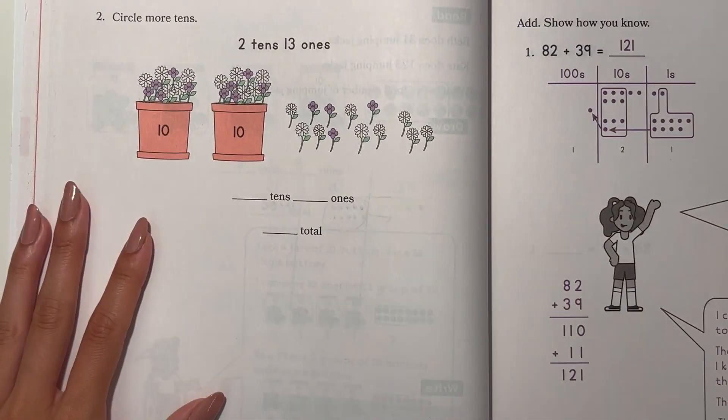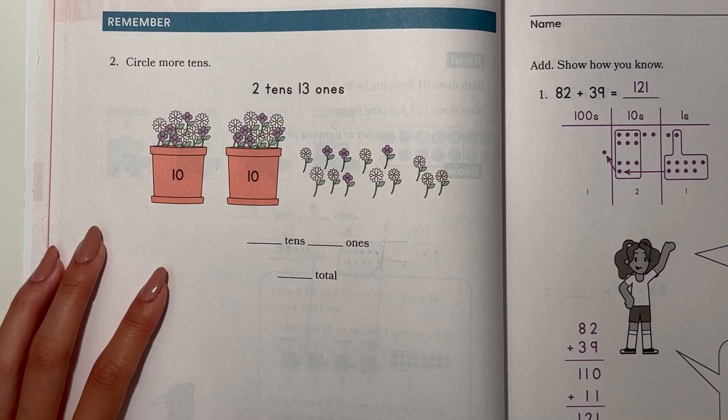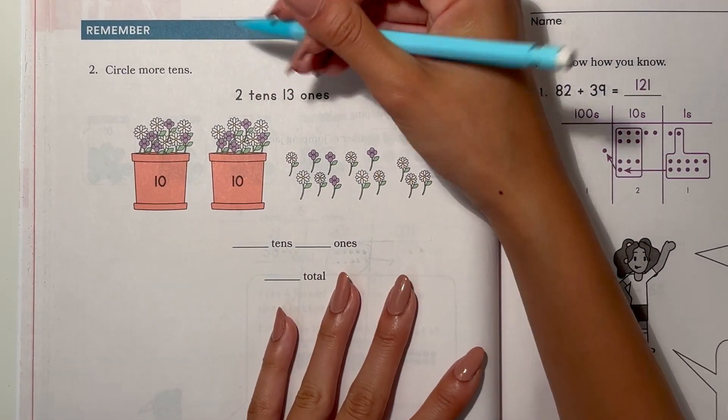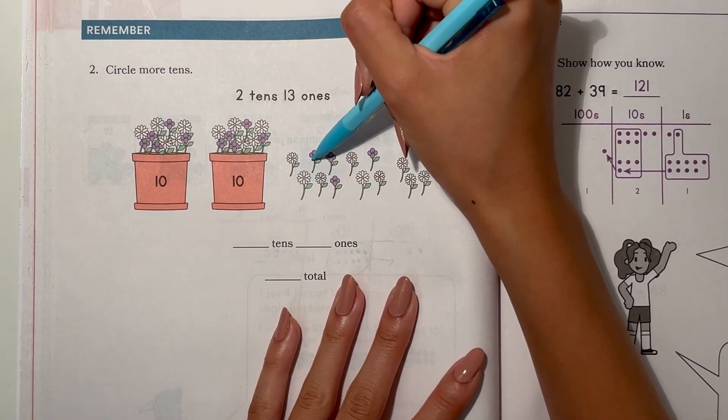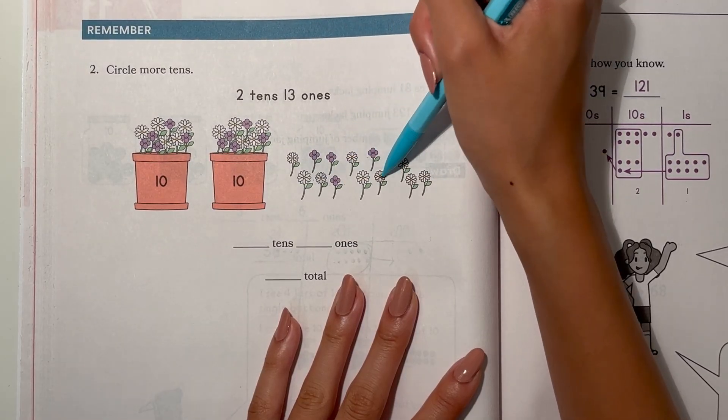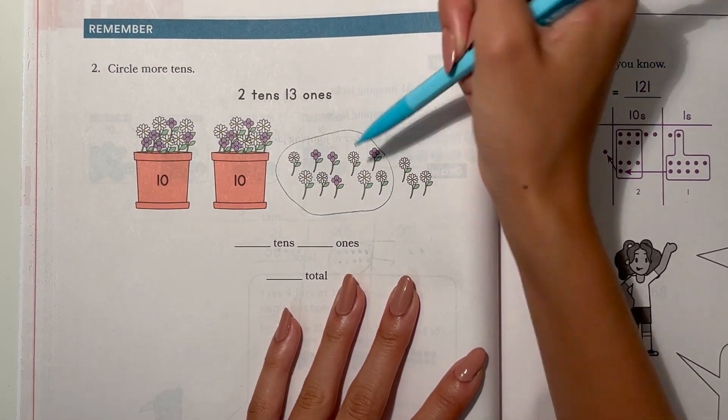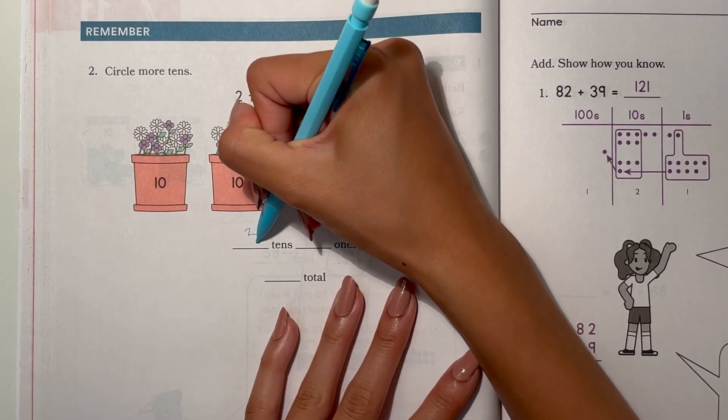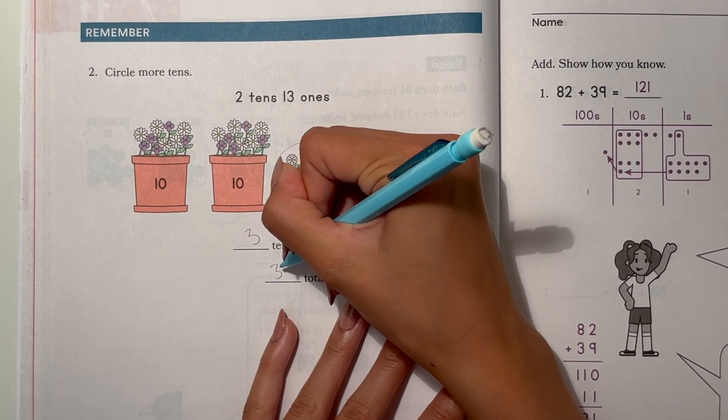Next, number 2. Circle more pens. 2 tens, 13 ones. 1, 2, 3, 4, 5, 6, 7, 8, 9, 10. Now we have 3 tens and 3 ones. Our total is 33.